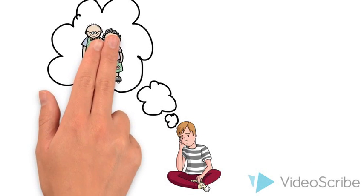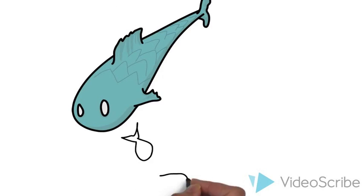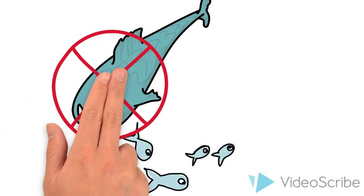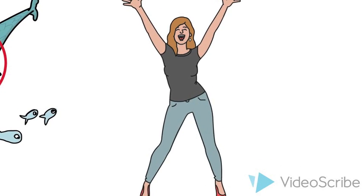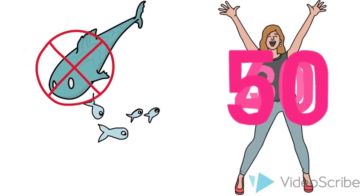Have you ever wondered why you have grandparents but your fish doesn't? It is uncommon for animals to live after they have offspring. However, humans have evolved to live 30, 40, or even 50 years after they are unable to have any more children.